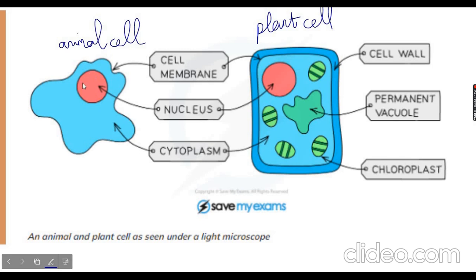In the animal cell you will notice the cell membrane — the outer layer that protects the cell contents. Animal cells have an irregular shape. They contain the nucleus, which is separated from the cytoplasm — a jelly-like substance — by the nuclear membrane. In the plant cell you will see two protective layers protecting the contents inside the cytoplasm.